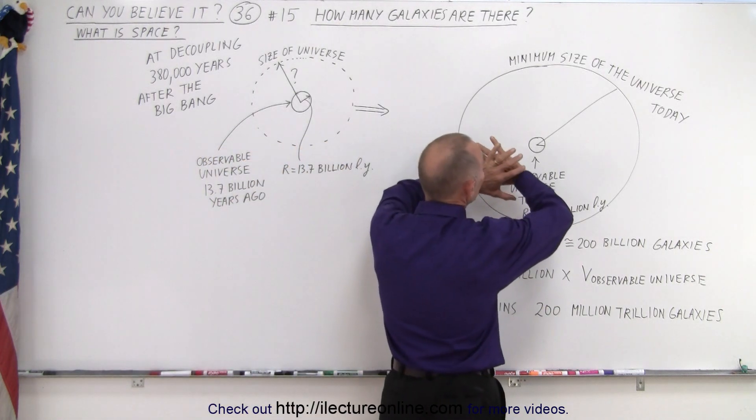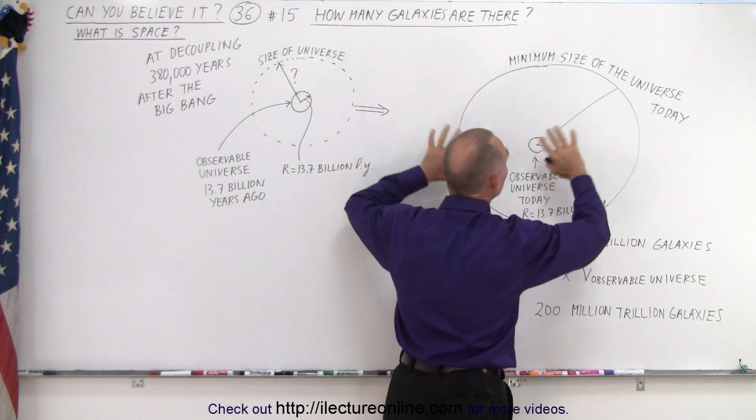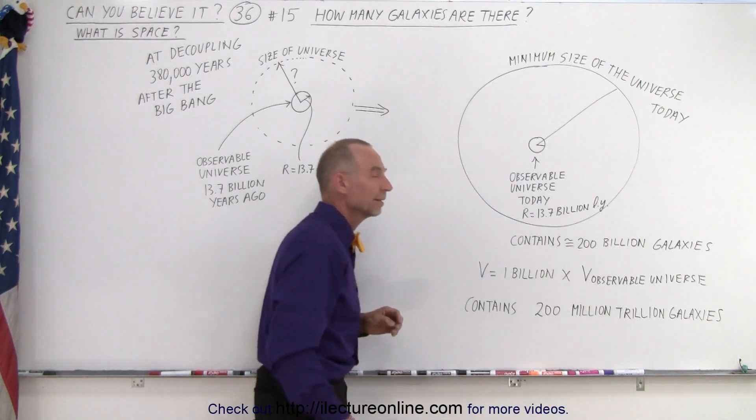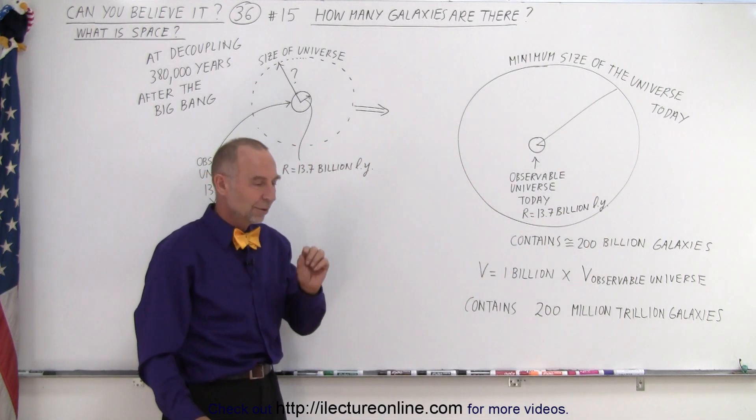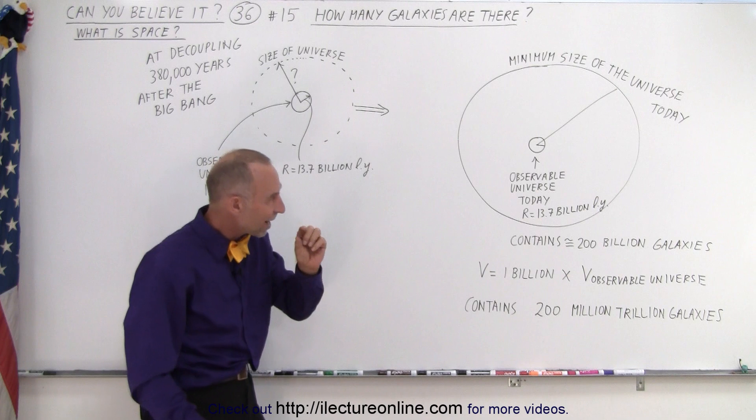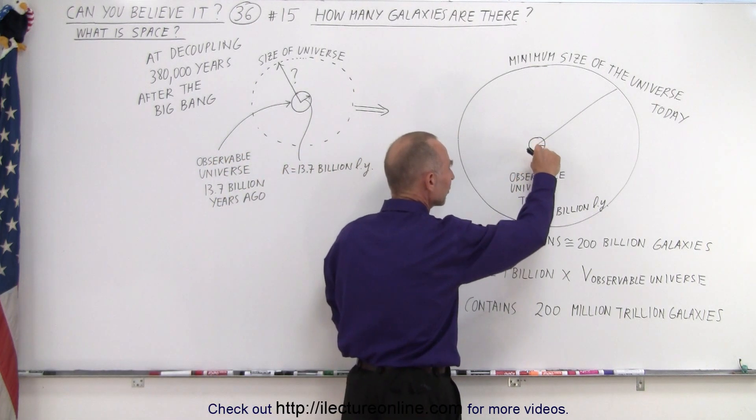And we know that is at least a minimum sized universe. The universe could be much, much bigger than that. So we can only see a very tiny portion, a very tiny fraction of the total universe.